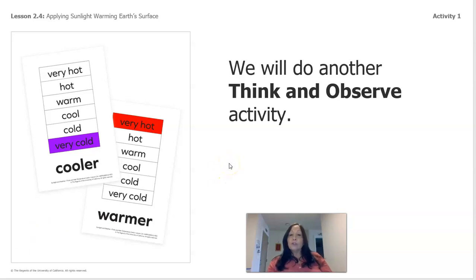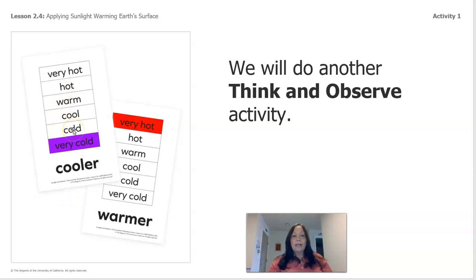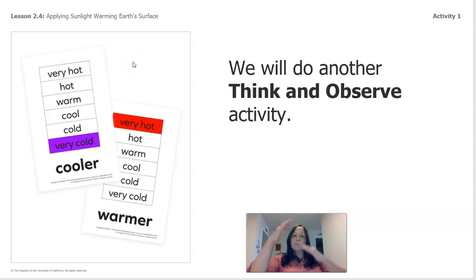We will do another think and observe activity. We've been showing you these color cards — when we see the color purple, it's very cold. When we see the color red, it's really hot. We have different degrees of temperature: very cold, cold, warm, hot, very hot. That's how the temperatures change.